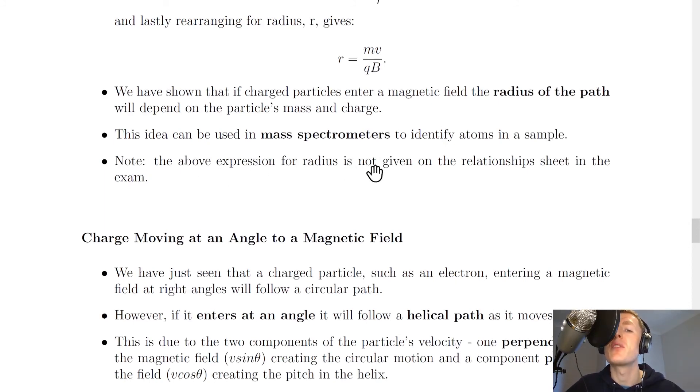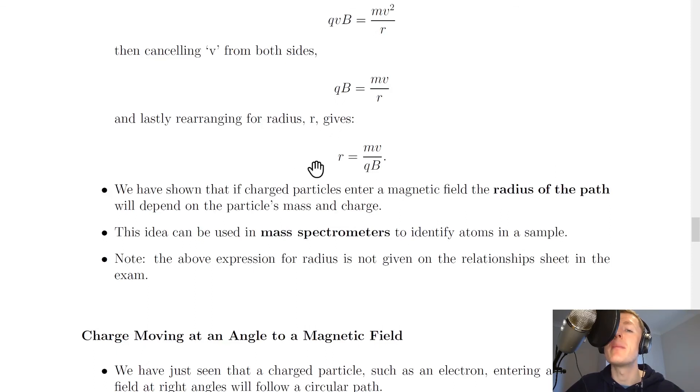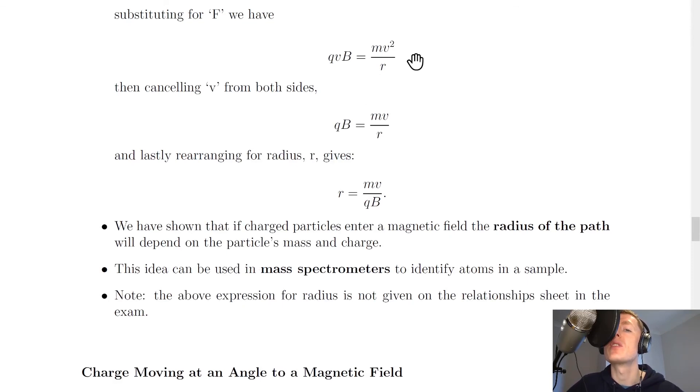And lastly, note the above expression for radius is not given on the relationship sheet in the exam. So you either need to remember this relationship r equals mv over qB, or know how to get there by equating the two forces of the magnetic force with the centripetal force.